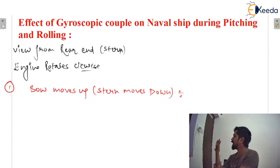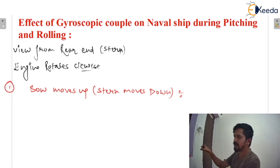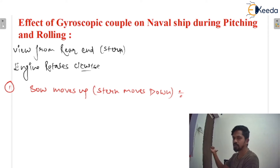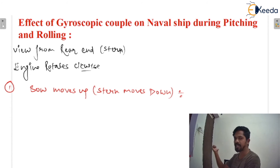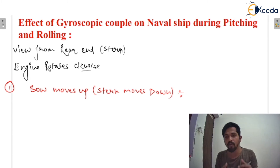Again to explain: this is our ship, this is our view from the rear side, and the engine rotates clockwise. If the ship rotates on the left side, there will be an active gyroscopic couple, and the reactive gyroscopic couple would be in that direction — towards the right side. So the ship will try to turn towards the right side, or you can say starboard.